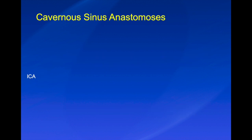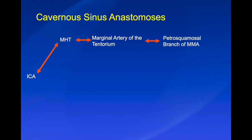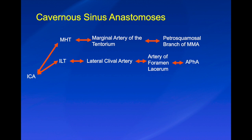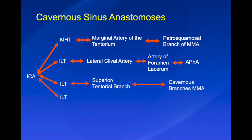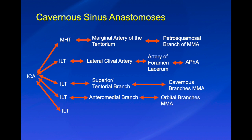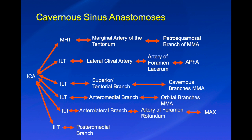For cavernous sinus anastomosis, these are much more numerous. We have the MHT with the marginal artery of the tentorium and the petrosquamosal branch of the middle meningeal artery. The ILT with the lateral clival artery, the artery of the foramen lacerum, and the ascending pharyngeal artery. The ILT with the superior or tentorial branch and cavernous branches of the middle meningeal artery. The ILT has an anteromedial branch anastomosing with orbital branches of the middle meningeal artery; an anterolateral branch connecting with the artery of the foramen rotundum and the internal maxillary artery; and a posteromedial branch connecting to the artery of the foramen ovale, the accessory meningeal artery, and the internal maxillary artery.